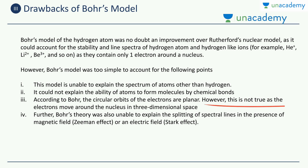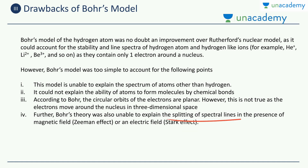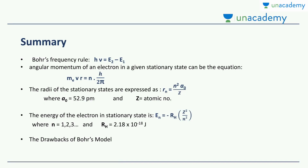In reality, electrons move around the nucleus in 3D space, not in a 2D plane, so Bohr's model could not answer how electrons move in 3D. The fourth drawback is that Bohr's theory was unable to explain the splitting of spectral lines in the presence of a magnetic field — the Zeeman effect — or in the presence of an electric field — the Stark effect. You'll learn about these later. These were the key drawbacks of Bohr's model.